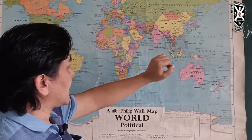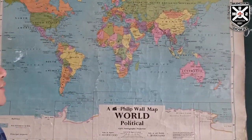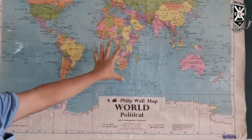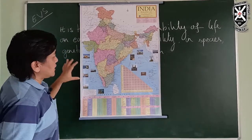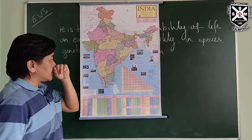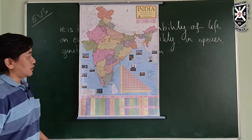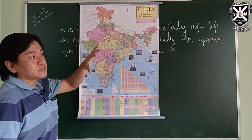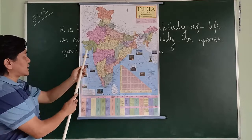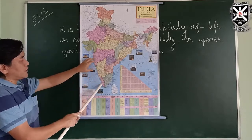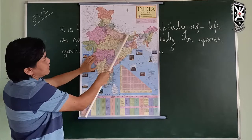In India, there are a lot of biodiversity-rich areas. Looking at the Indian map and the world map, India has significant biodiversity-rich regions throughout the country.